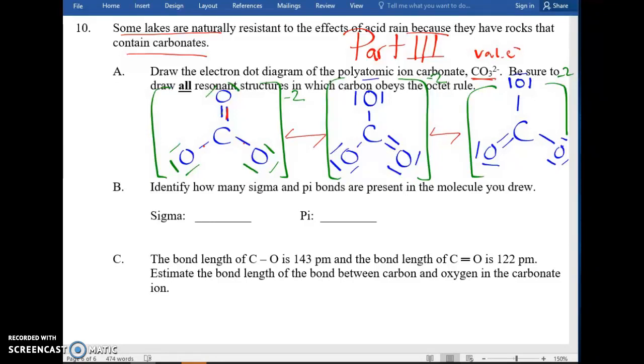Using one of the resonance structures, now we can count up the number of what we call sigma bonds, signified in Greek by that, and a pi bond. A little refresher, I could have, let's imagine that we have bonds between carbon, a single bond between two carbons, a double bond between two carbons, and a triple bond between two carbons.